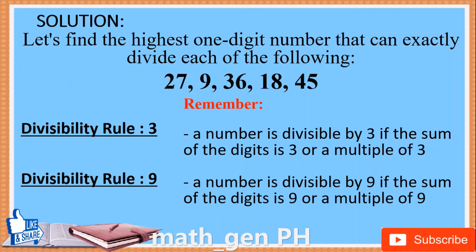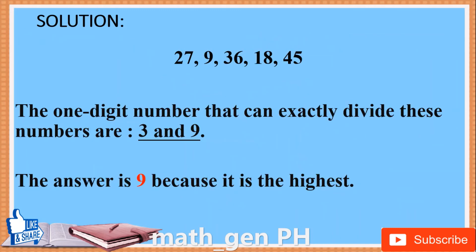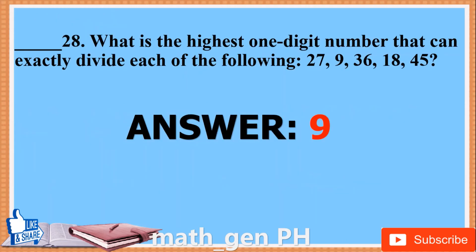Solution. Let's find the highest one-digit number that can exactly divide 27, 9, 36, 18, and 45. These numbers are divisible by 3 and 9. Divisibility rule for 3: a number is divisible by 3 if the sum of its digits is 3 or a multiple of 3. The one-digit numbers that can exactly divide these numbers are 3 and 9. The answer is 9 because it is the highest. Answer: 9.